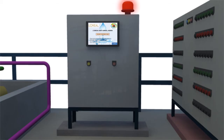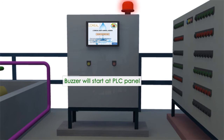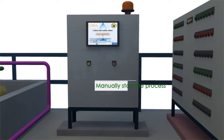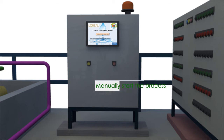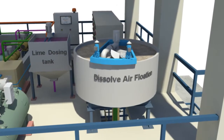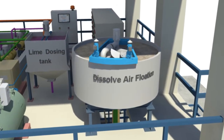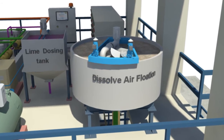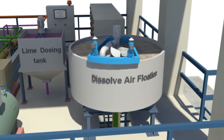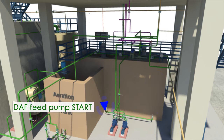After reaching the desired pH level, an indication is given via buzzer on the PLC panel. Once the system reaches this desired level, further action needs to be taken manually. The DAF central drive unit will first need to be started, followed by startup of the air compressor, and then the DAF pump.